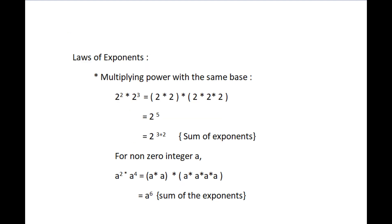Next, we will see about laws of exponents. First is multiplying powers with the same base. For example, 2 to the power 2 into 2 to the power 3 equals 2 to the power 5, which is equal to 2 to the power 3 plus 2. Note that the base in 2 power 2 and 2 power 3 is the same, and the sum of exponents, that is 2 and 3, is 5. See another example: a to the power 2 into a to the power 4 equal to a to the power 6.